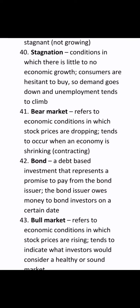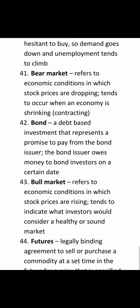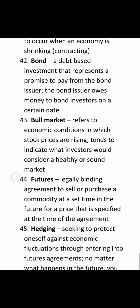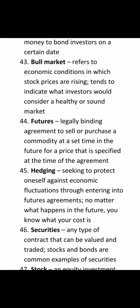A bear market refers to economic conditions in which stock prices are dropping, typically when an economy is shrinking. A bond is a debt-based investment that represents a promise to pay from the bond issuer — the issuer owes money to bond investors on a certain date. A bull market refers to economic conditions in which stock prices are rising.